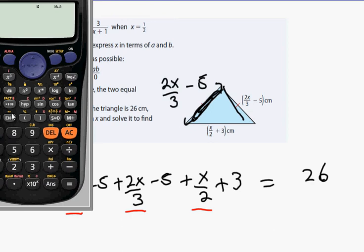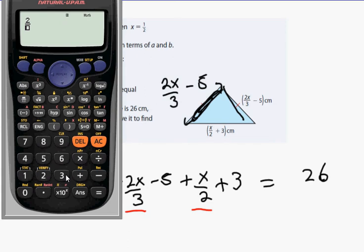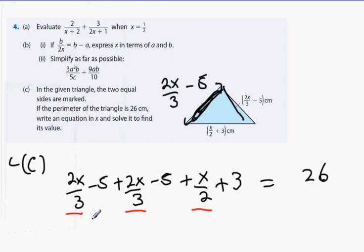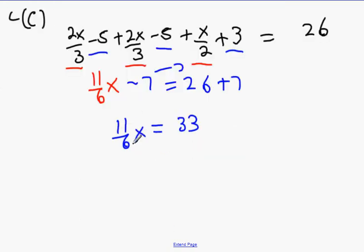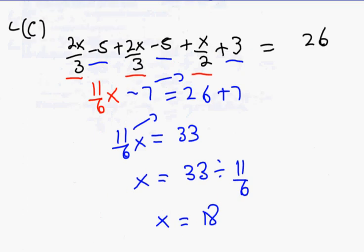Now, what I want you guys to do in your calculator is add all the x's together. So it's 2 over 3, 2 over 3 plus 1 half. So you're just going to go 2 over 3 plus 2 over 3. Now you don't put in the x's because it doesn't work with the x's in it. Plus 1 half. 11 over 6. 11 over 6x. Is everybody happy with that? Now blue section. Minus 5 minus 5 plus 3. Minus 7 equals 26. Bring the 7 over the other side. And what do we get? 11 over 6x equals 33. Now if it's multiplied by 11 over 6 on the left, what happens when I bring the 11 over 6 to the other side? If it's multiplied on the left, it's divided on the right. So 33 divided by 11 over 6. What did we get? 18.